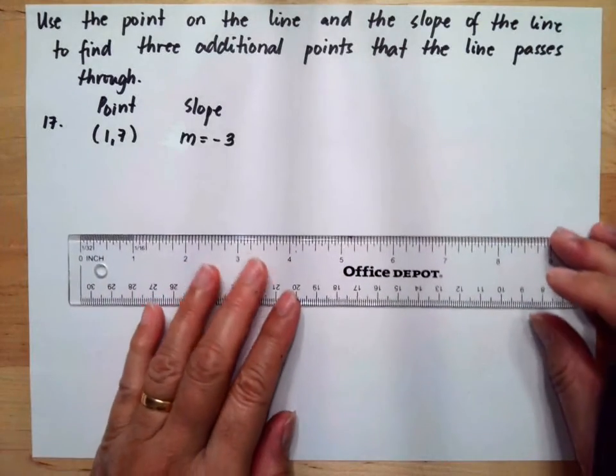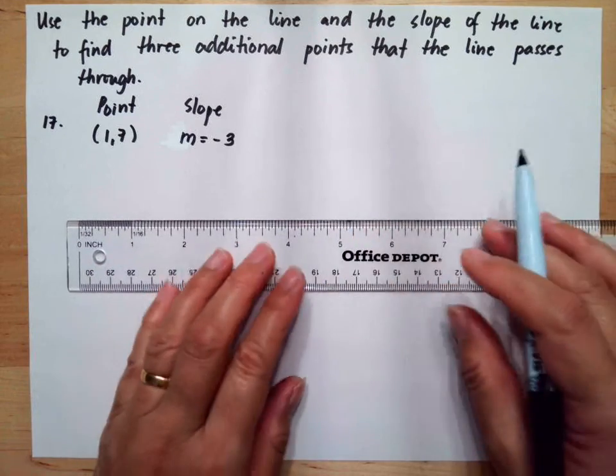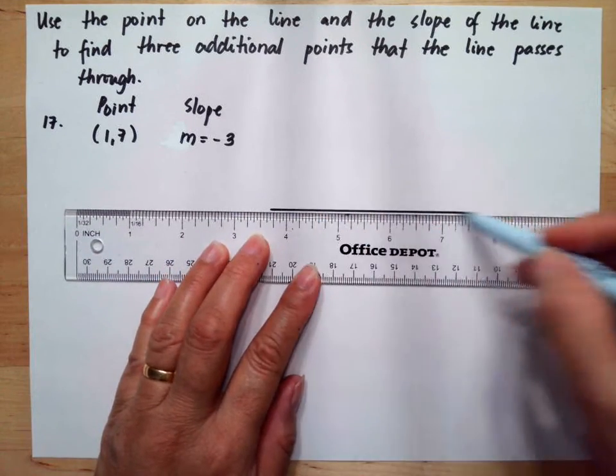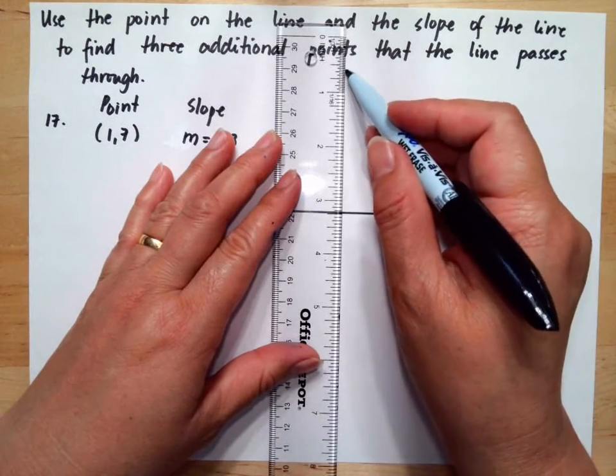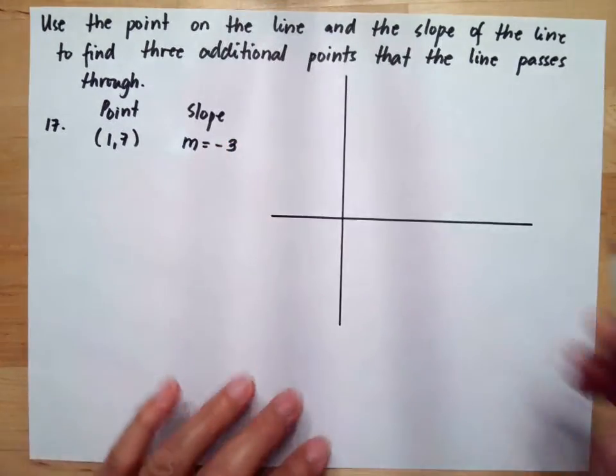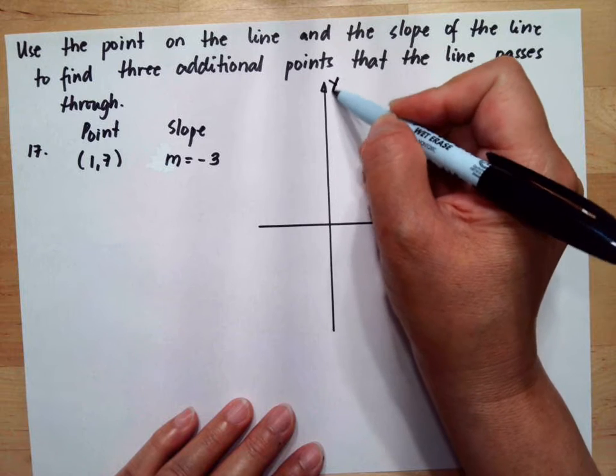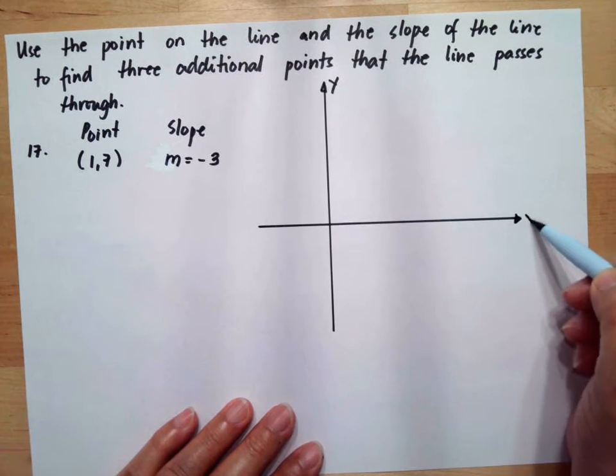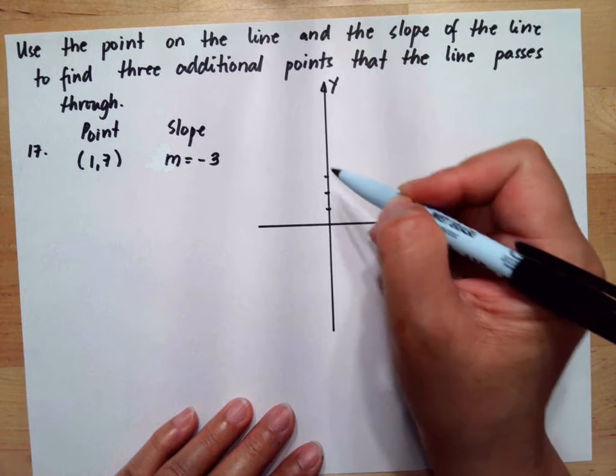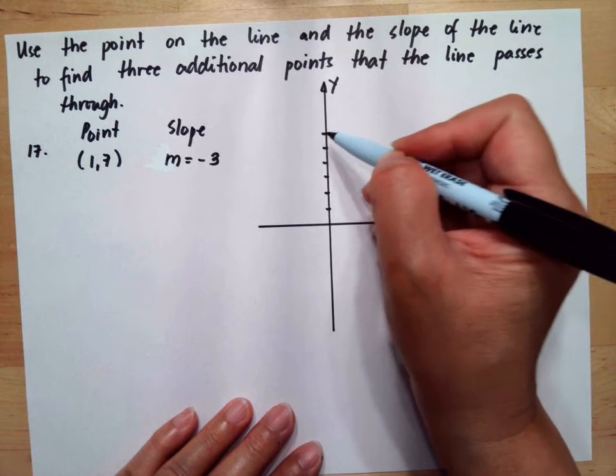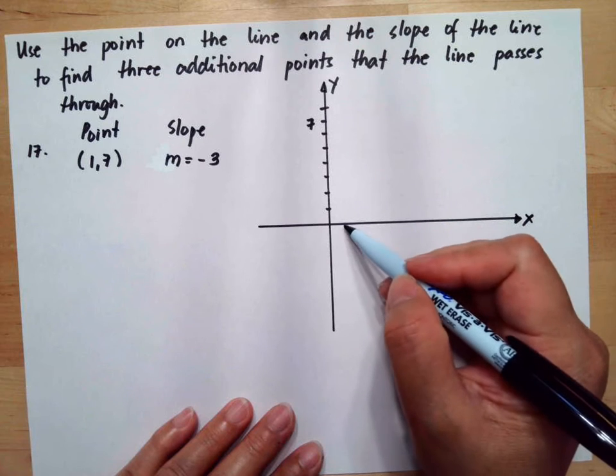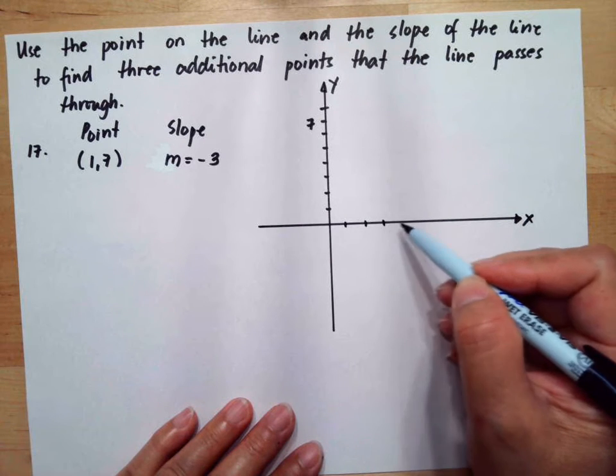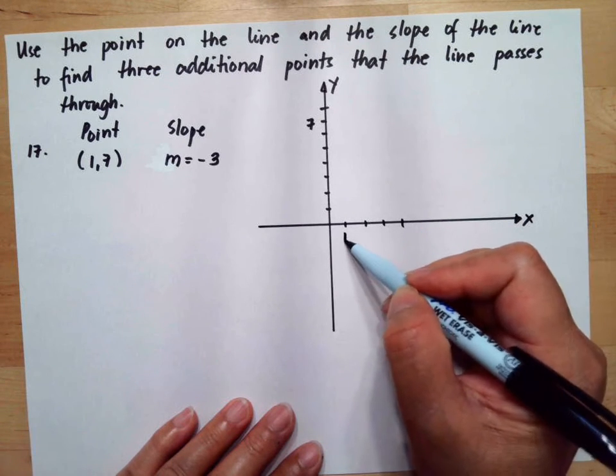So if we draw this. This is your y-axis, this is the x-axis. So we have 1, 2, 3, 4, 5, 6, 7, so this is 7. And we have 1, 2, 3, 4, so this is 1.